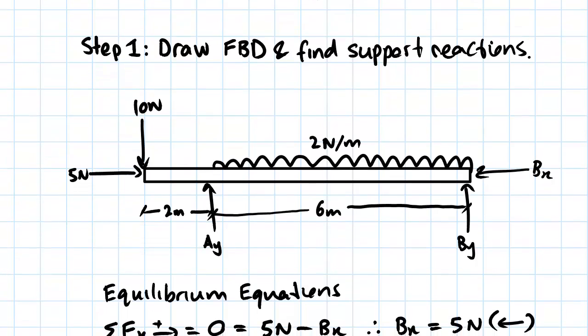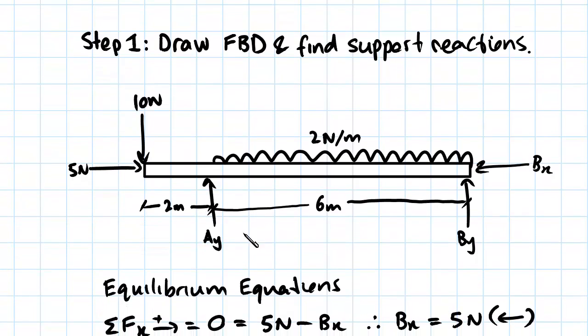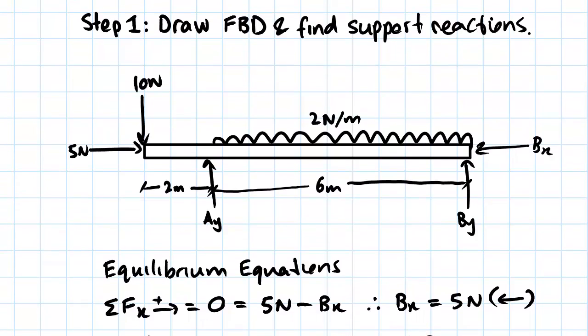We'll start by applying the equilibrium equation in the x direction. Setting that equal to zero, we end up with this force here minus this force here. Then we can solve for Bx and we find that Bx is 5 Newtons, with a little arrow to the left to show the direction in which it's acting.